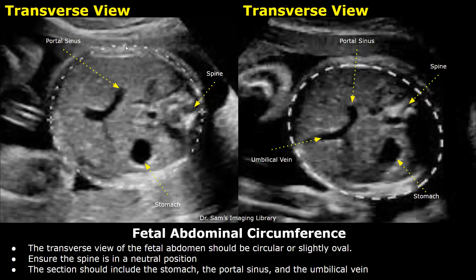This L-shaped structure going towards the liver is the portal sinus, and this is the umbilical vein. This round anechoic structure is the stomach, and this hyperechoic structure is the spine.